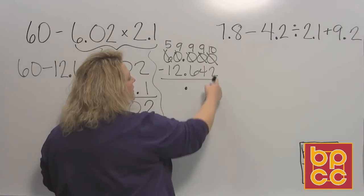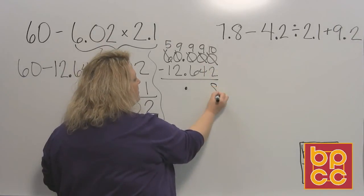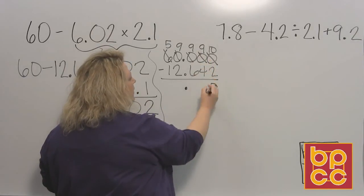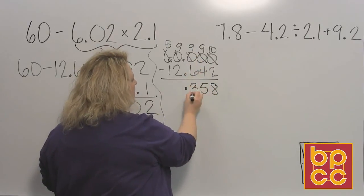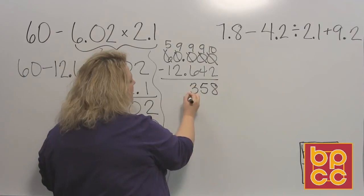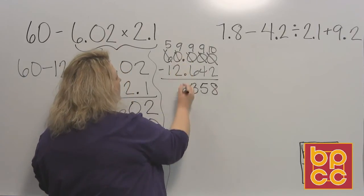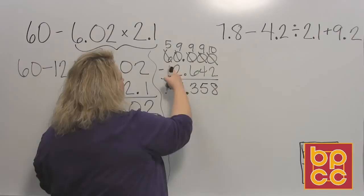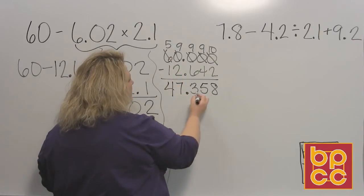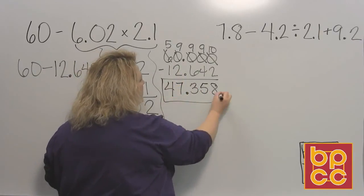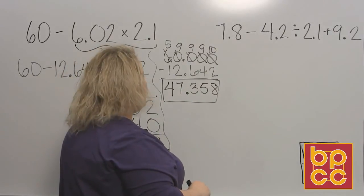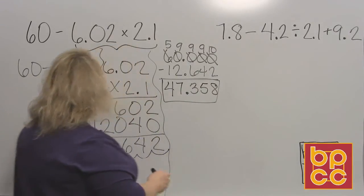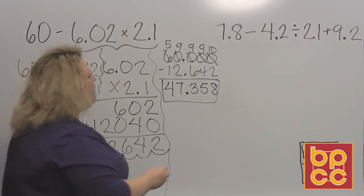And now I just subtract. 10 take away 2 is 8. 9 take away 4 is 5. 9 take away 6 is 3. Oh, my decimal. Let me make it a little further down. 9 take away 2 is 7. 5 take away 1 is 4. So this, 47 and 358 thousandths, this is my final answer. Okay? I'm going to write it. Well, I'll just leave it there.